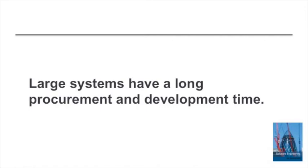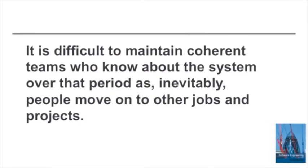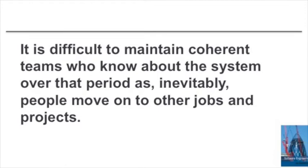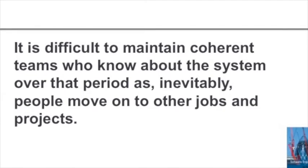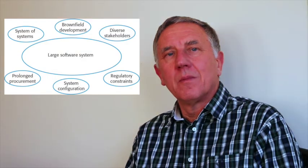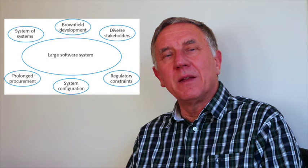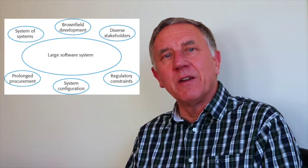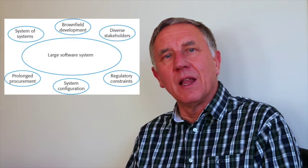And finally, the procurement process for a large system, which may cost tens or hundreds of millions of pounds or dollars, can take place over a very long time. During that time, many other things change and that affects the requirements for the system. A consequence of the long procurement time is that it's very difficult to keep a single team together throughout the procurement and development of a large system, so it's more difficult to implement informal information sharing, which is such a fundamental part of agile development.